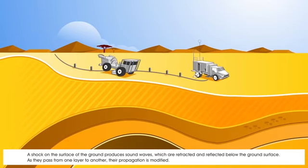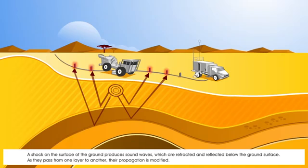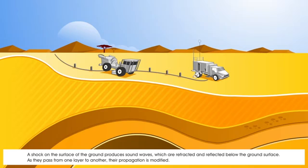A shock on the surface of the ground produces sound waves, which are refracted and reflected below the ground surface. As they pass from one layer to another, their propagation is modified.